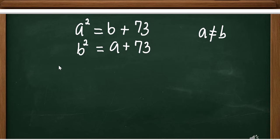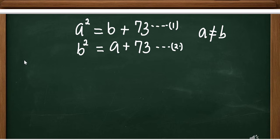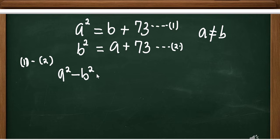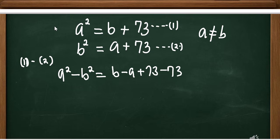We are interested in getting the value of A and B. Let this be our first equation and this is going to be our second equation. The first thing to do is to subtract equation 1 minus equation 2. By doing that, we're going to have A squared minus B squared equals B minus A plus 73 minus 73, subtracting column-wise.